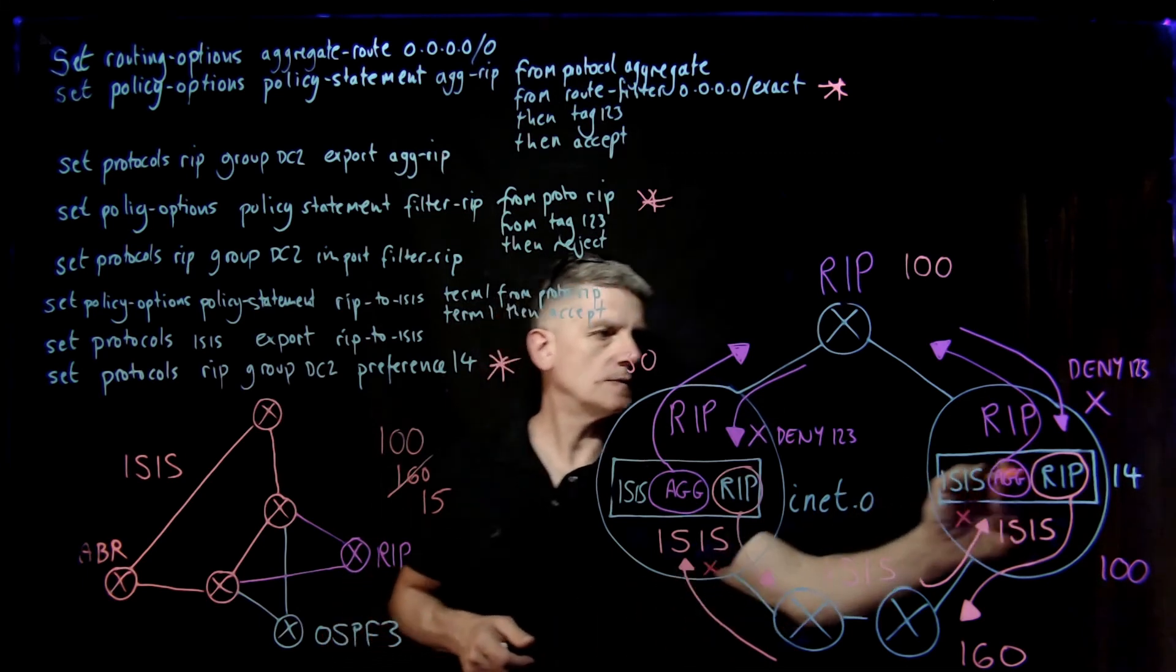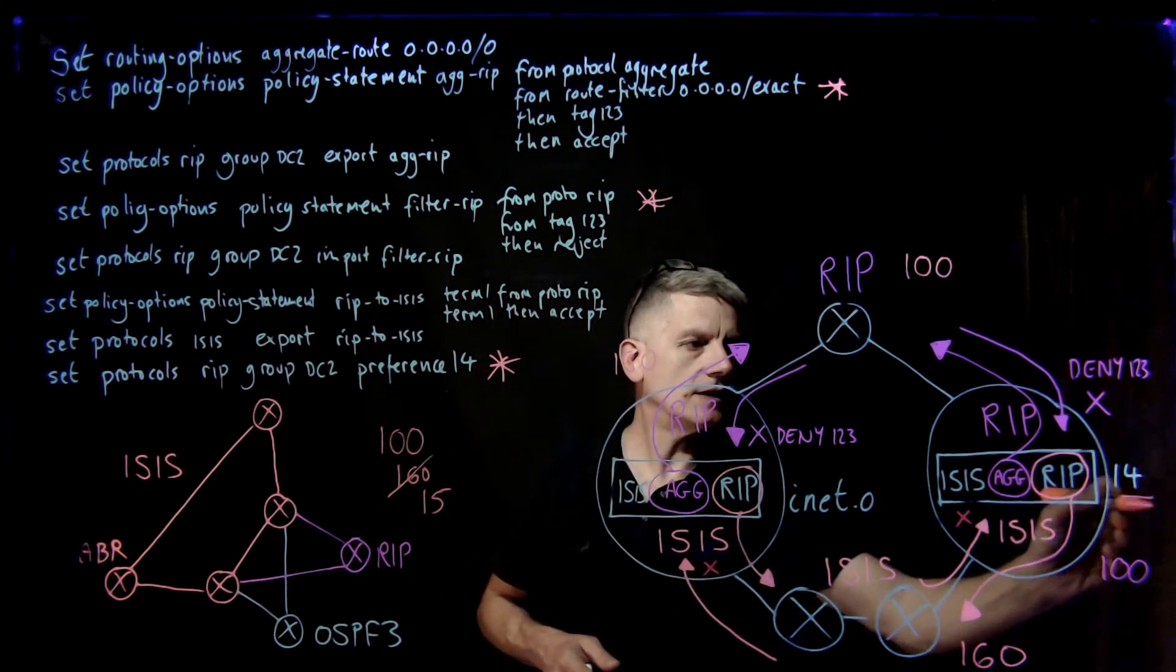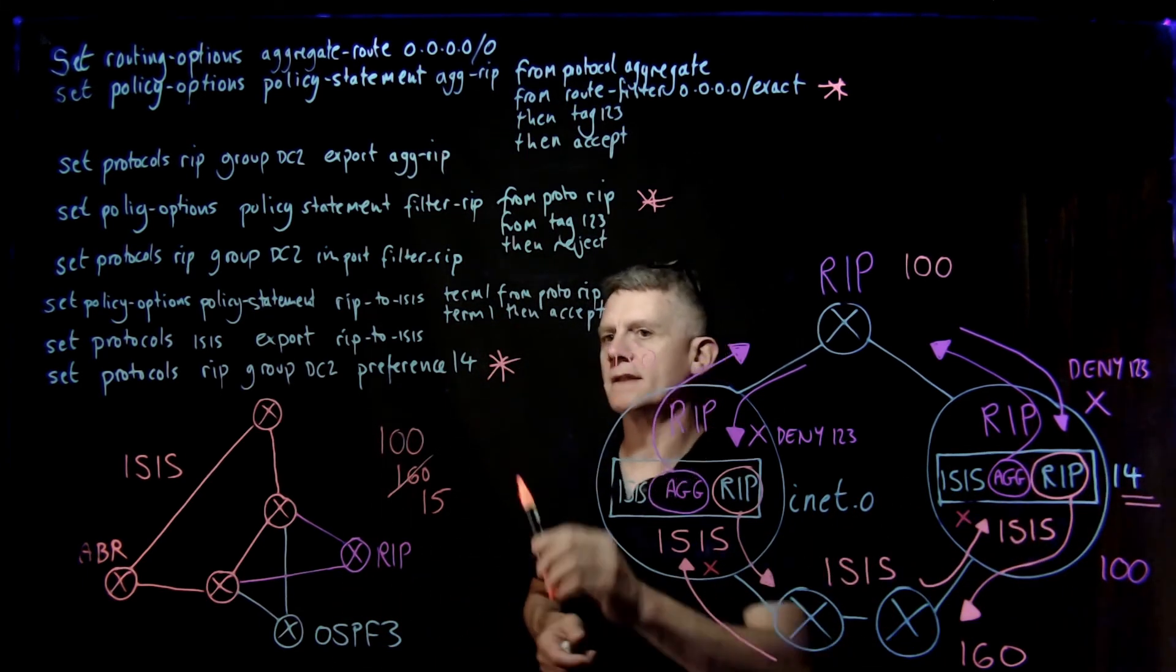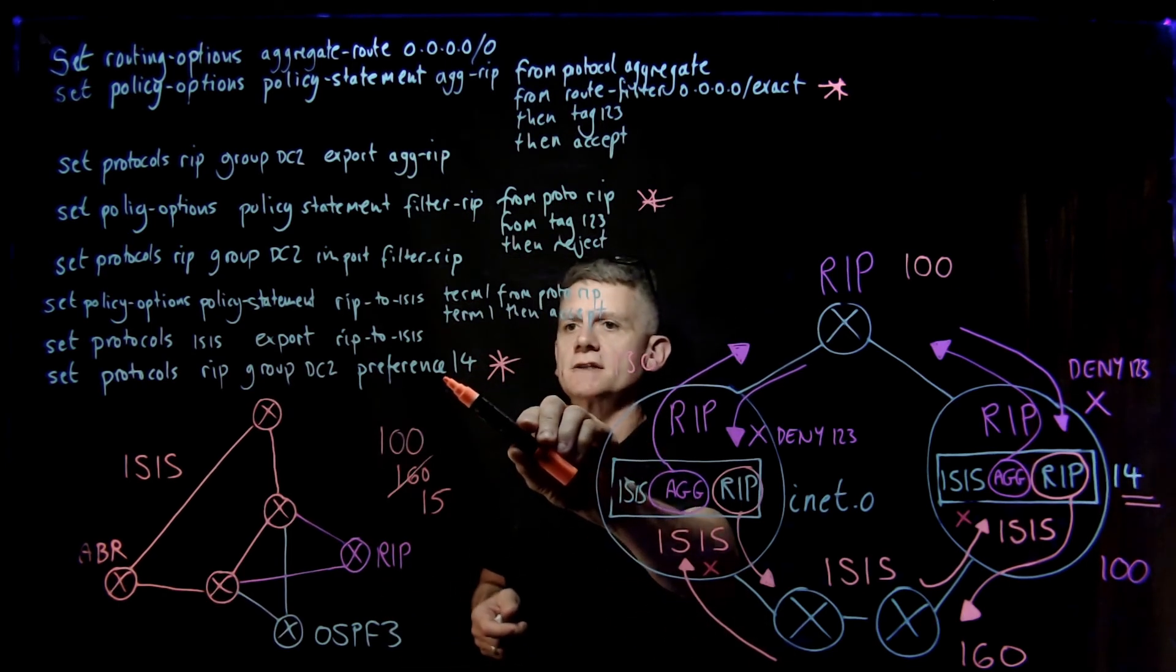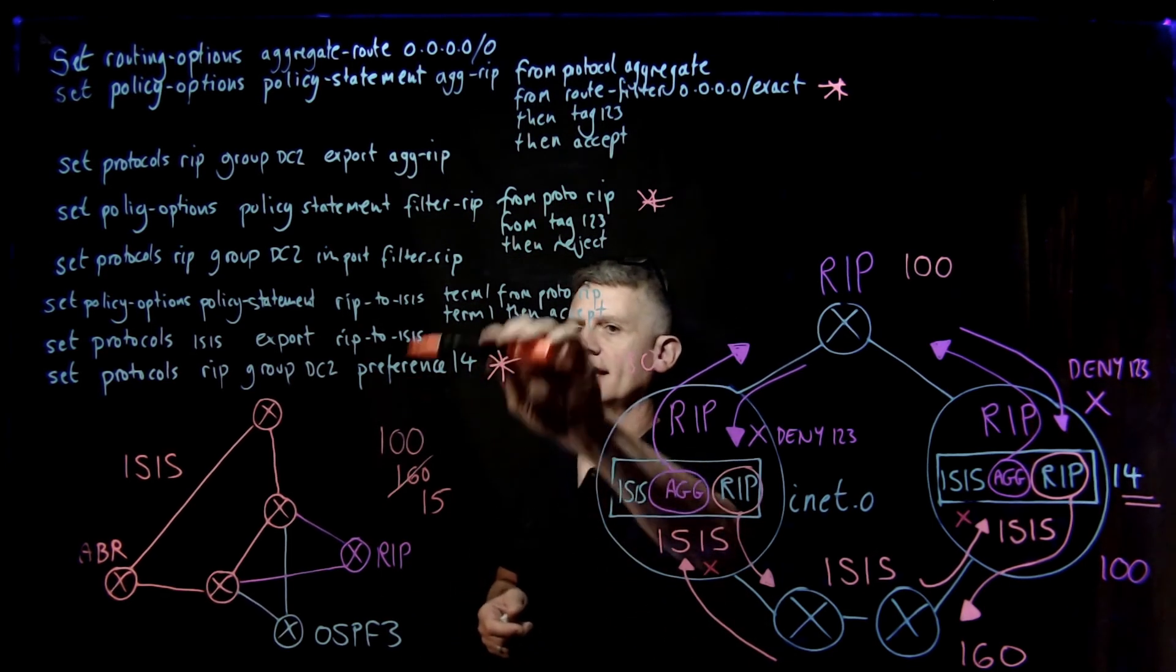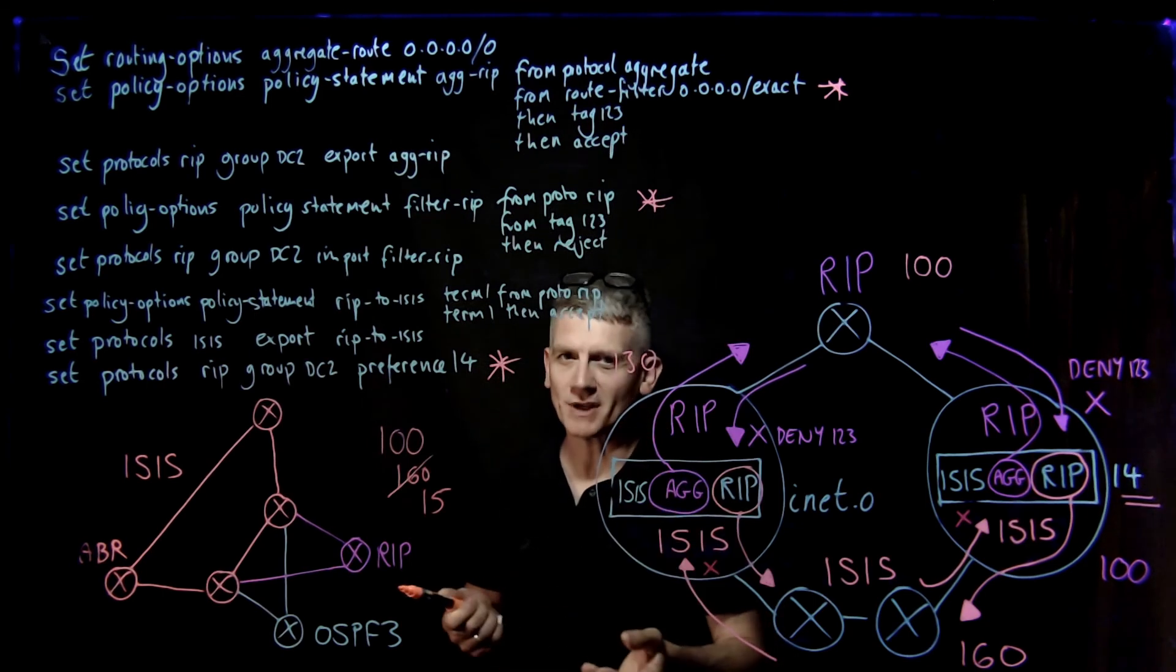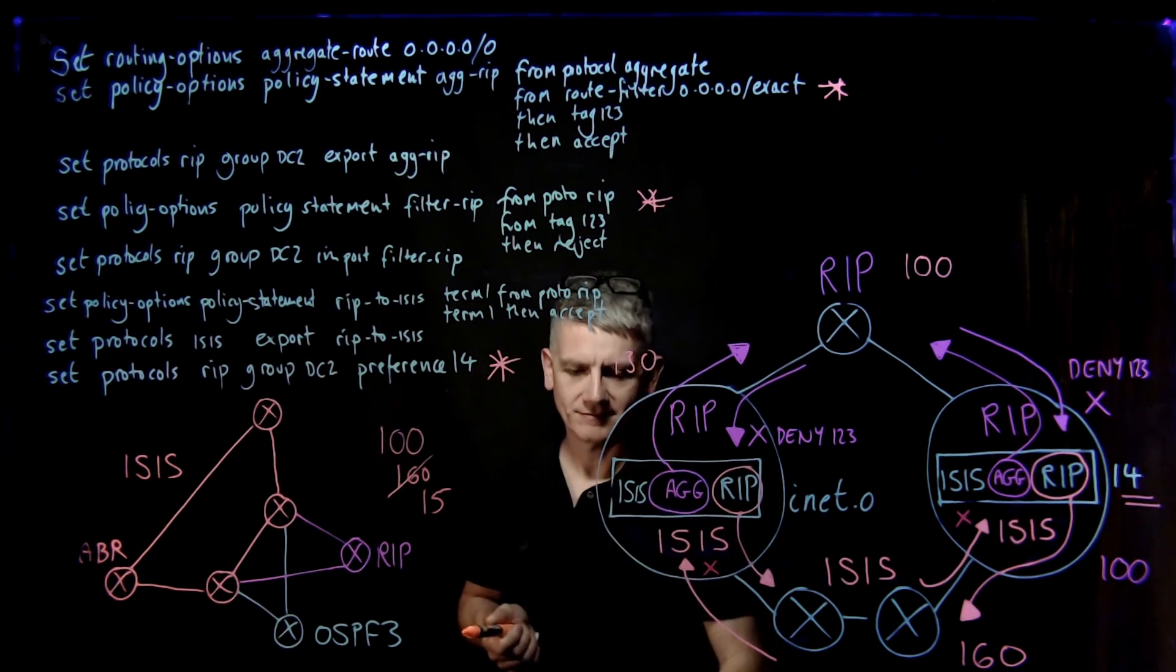So what we're going to do is we're going to manually set the RIP preference to 14. And then that way, it will be able to defend itself. And so in this way, we don't need that import policy, although we could have it.